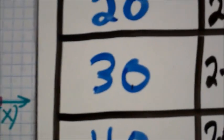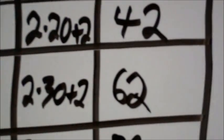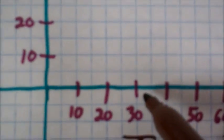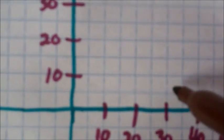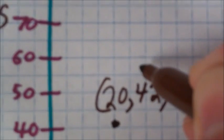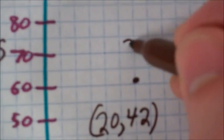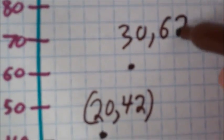Our next ordered pair is (30, 62). So we're going to go over 30 first. And then we're going to go up, 62. So we're going to label that (30, 62).